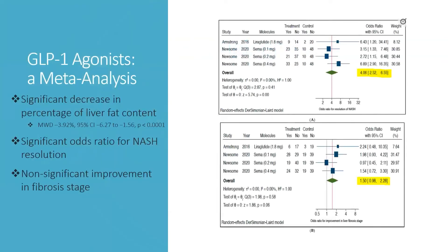GLP-1 agonists are known as a treatment option for diabetes as well as for weight loss. A meta-analysis that looked at liver outcomes showed a significant decrease in the percentage of liver fat content, with a mean weighted difference of negative 3.92%. This included seven studies with exenatide, liraglutide, dulaglutide, and semaglutide. The top figure shows the odds ratio for NASH resolution, which included four different studies with liraglutide and semaglutide, and this was statistically significant. The bottom shows a non-significant improvement in fibrosis stage.